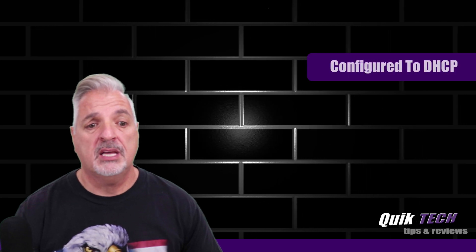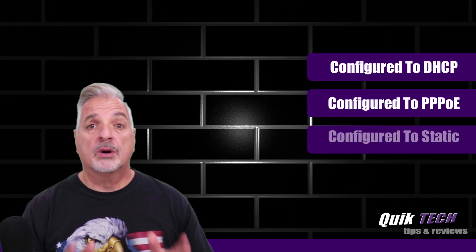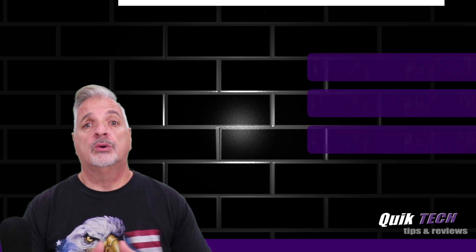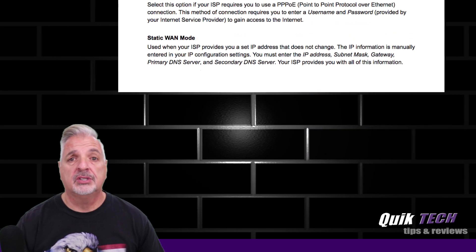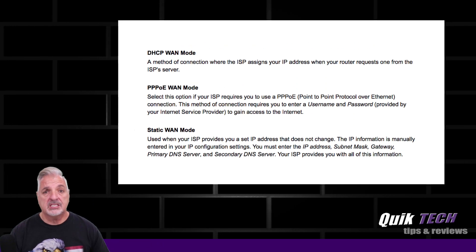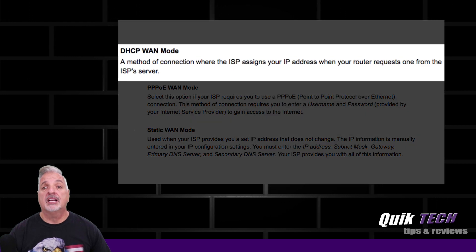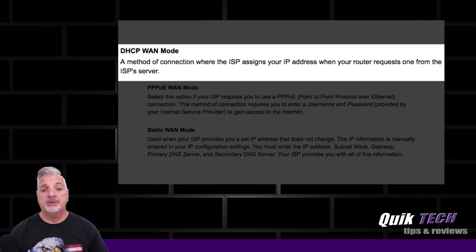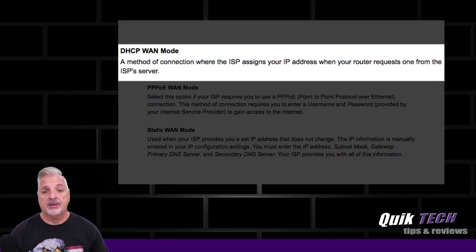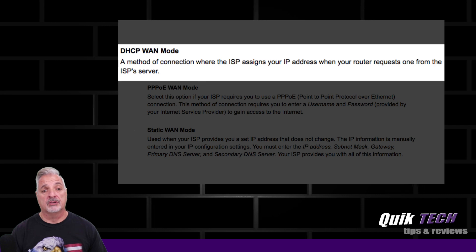So for example, the USG can be configured to DHCP, PPPoE, or static IP. To take a closer look at each of these — with the DHCP WAN mode, it says here: a method of connection where the ISP assigns your IP address when your router requests one from the ISP server.